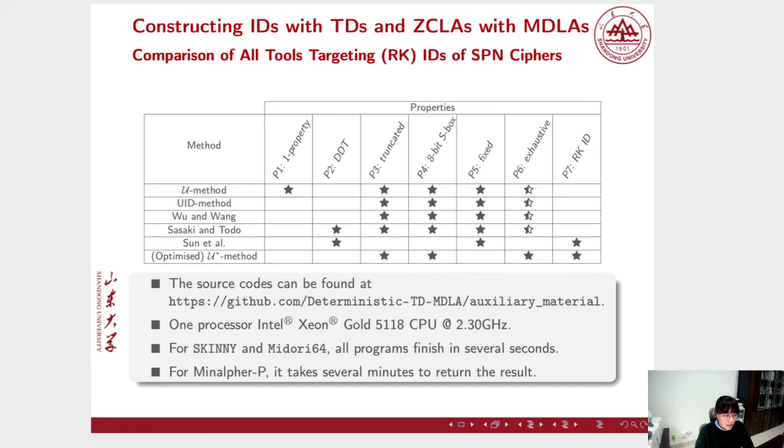This is a comparison of all tools targeting RKIDs of SPN ciphers. An outstanding feature of our tool is it supports the exhaustive search. Our source codes are openly available and all tests in the paper are implemented with one processor. Since the runtime varies with different settings, we only provide some kind of rough runtime. For the applications of Skinny and Midori64, all programs finish in several seconds, and for Midori-P, it takes several minutes to return the result.